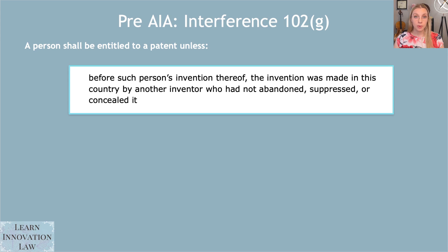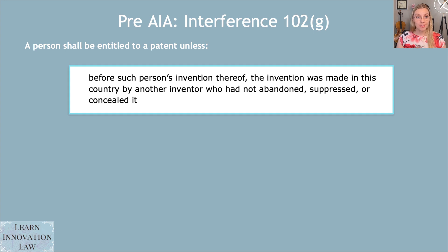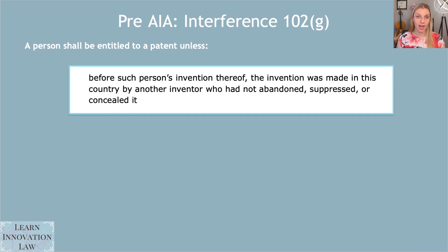If you have two people fighting over ownership of a patent because they filed around the same time, in this pre-AIA world you're going to do a timeline of who came up with the idea first — were they diligent in coming up with the idea before they reduced it to practice? This is a pretty complicated determination that, again, should be assisted by an attorney.